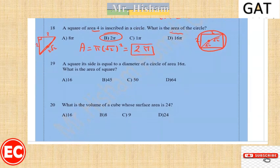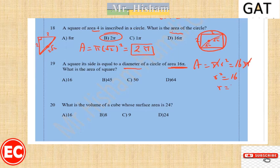Question nineteen: a square has a side length equal to the diameter of a circle whose area is 16π. So πr² = 16π, r² = 16, and r = 4. The diameter is 8, but the side of the square equals the diameter — wait, the side equals the radius 4. So the area of the square is 4 times 4 = 16.